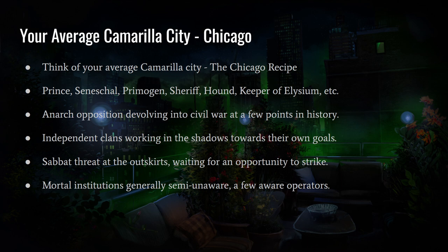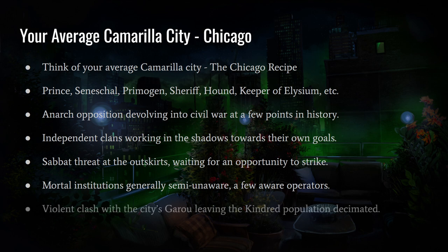Mortal institutions weren't covered extensively in the Chicago source books, but I think they're very important because they're the playing pieces of the prince and the primogen. You had the police, the mental institute that Sun was involved in, hospitals, blood banks, nightclubs — a very prevalent mortal faction especially in V5. You also had the violent clash with the city's Garou, leaving the kindred population decimated — the major event happening between first and second edition of Chicago by Night.